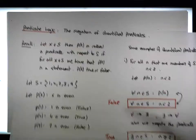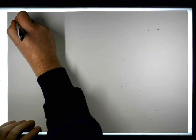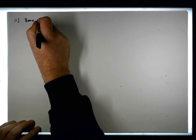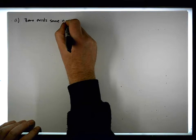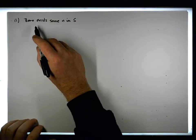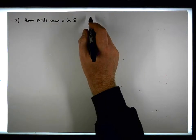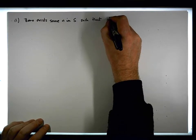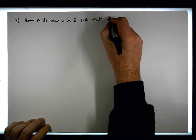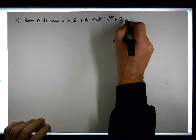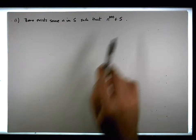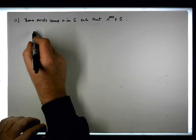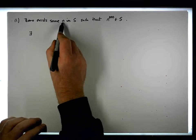Let's have a look at another example — example two. There exists some n in s, such that n to the power of 200 is an element of s. Let's write it down using our quantifiers: there exists an n in s, so n has to be...